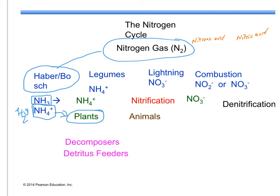The second form of nitrogen fixation is with legumes. Legumes are plants like peas, beans, alfalfa, and sweet clover. They have a symbiotic relationship between the rhizobium bacteria and the root system. That makes ammonia, and when it disassociates in water, it forms the ammonium ion, and the ammonium ion can be absorbed directly by plants.